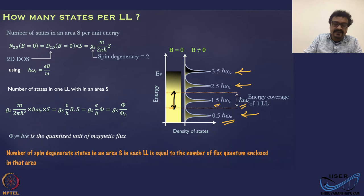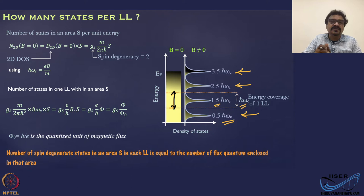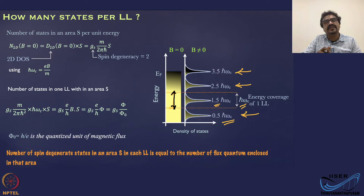The number of states in an area S per unit energy is basically the density of states — that is, the number per unit energy per unit area (this is the two-dimensional case; per unit volume in three dimensions). This condition is taken at B = 0, because the number of states are not going to change — the number of states are those in the constituent solid, determined by the number of atoms. No new states are created.